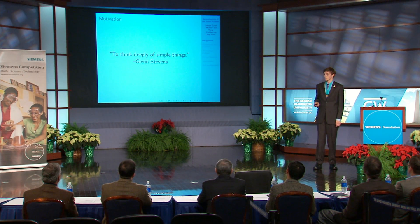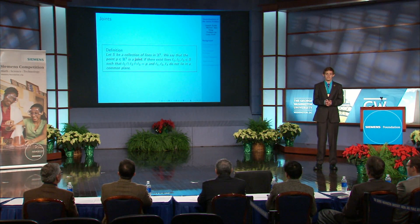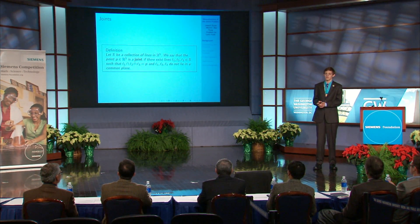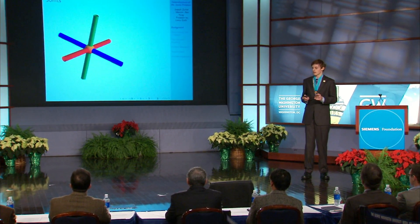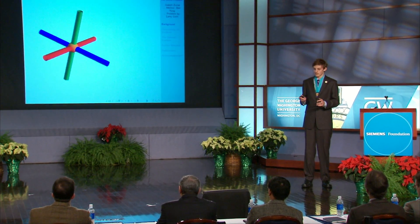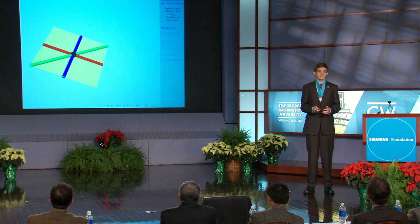We can try to generalize this problem to three dimensions. We're going to define a joint as the intersection of three lines in three dimensions at a single point. A joint looks something like this. In particular, it does not look like this, because we also have a condition that the lines not all lie in a common plane — that's to get rid of some trivial cases. We've defined this mathematical object, and it's a natural question to count it: if we have a function that counts the number of joints we can make with a given number of lines, what does that function behave like?